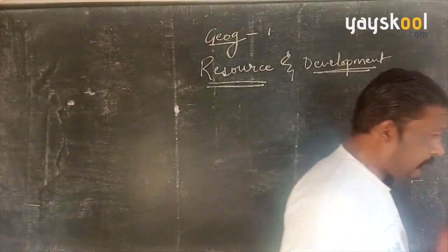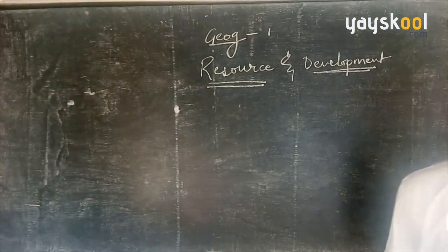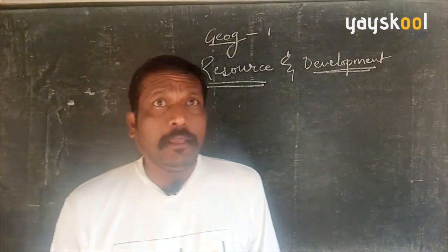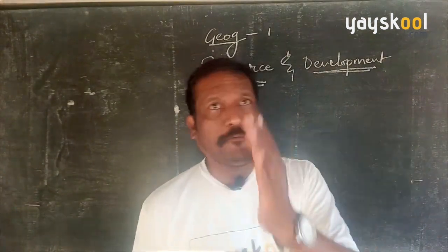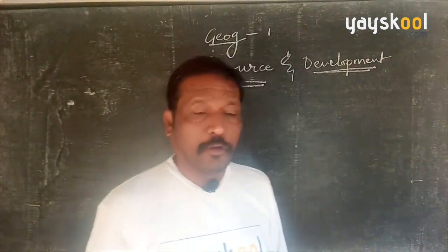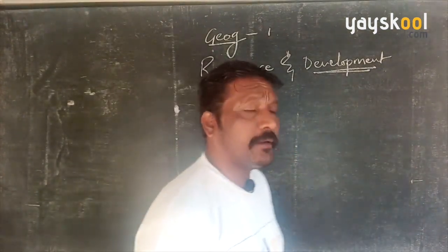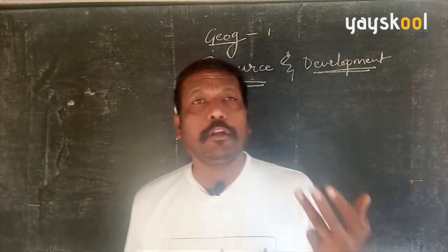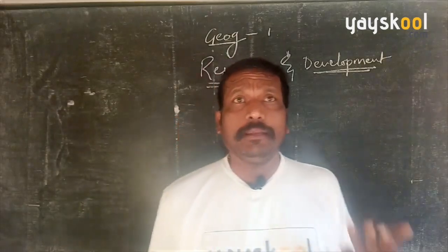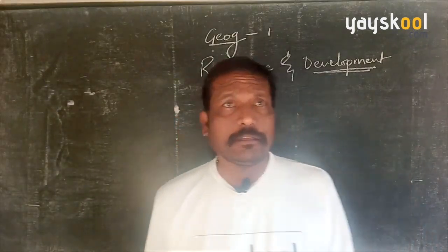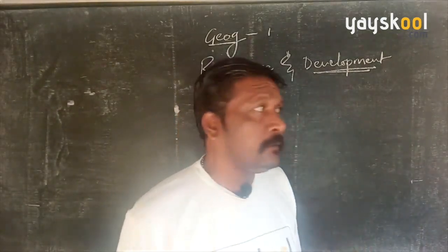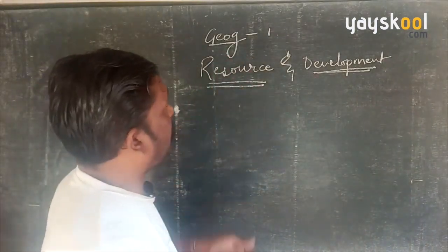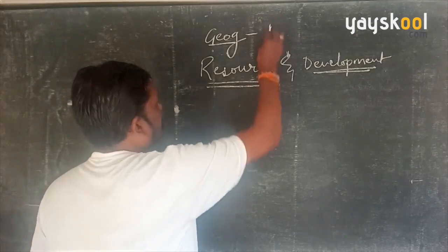Good morning everyone — good morning, good afternoon, good evening, whenever you are watching the video. Today we are going to cover the geography part. We have already completed economics — up to five lessons. First was development, second was sectors of economy and Indian economy, third was money and credit, fourth was globalization, and fifth was consumer protection. Now today we are going to start geography chapter one: Resources and Development.